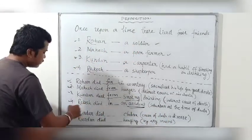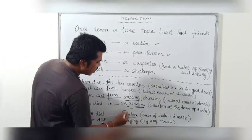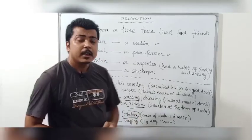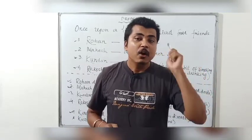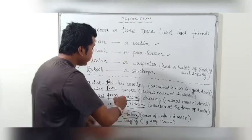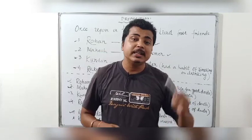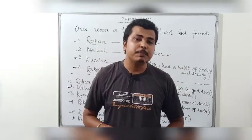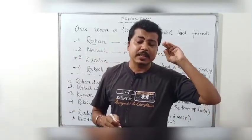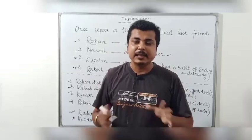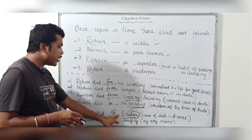Next example: Kundan died of cholera. Cholera is a disease. If a person's death is caused by a disease — any disease — we use the prepositional word 'of'. So: if a person dies of any disease, such as cholera, pneumonia, or tuberculosis, we use the preposition 'of'.